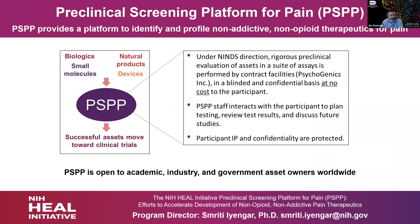The Preclinical Screening Platform for Pain, or PSPP, provides a platform to identify and profile non-addictive, non-opioid therapeutics for pain. It is responsive to biologics, small molecules, natural products, and also has the ability to test devices. It provides rigorous preclinical evaluation in a suite of in vitro and in vivo assays performed by contract facilities — Psychogenics being the contract holder — at no cost to the participant. All work is done on a blinded and confidential basis with intellectual property protected. This program is open to academic, industry, and government asset owners worldwide. Program director is Smirti Iyengar.